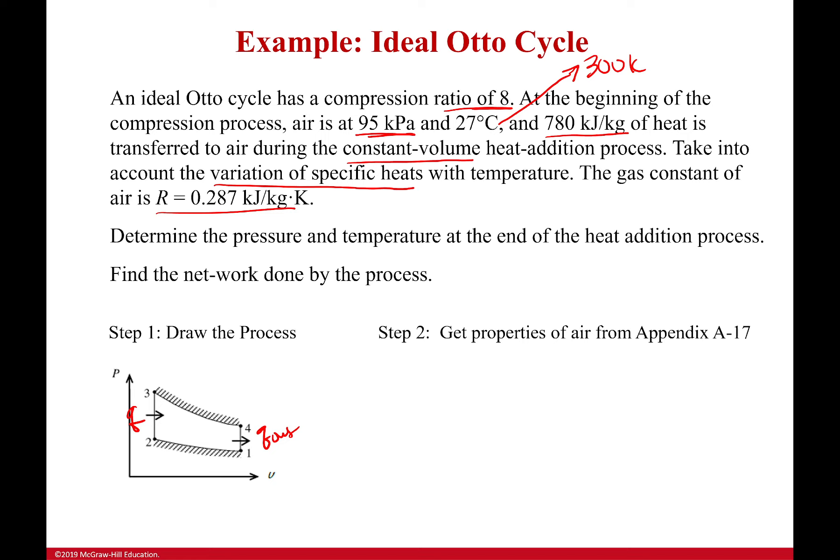So, if we're going to do this, like I said, since it says variation specific heats, we're going to have to get the properties of air from appendix A17. Now, I showed you in the last video where the appendices are. I also showed you how to interpolate, which we're not going to have to do for this first one. So, just know where they come from.